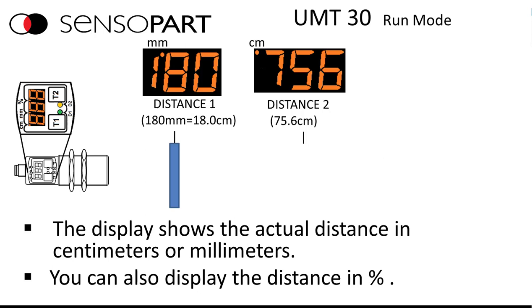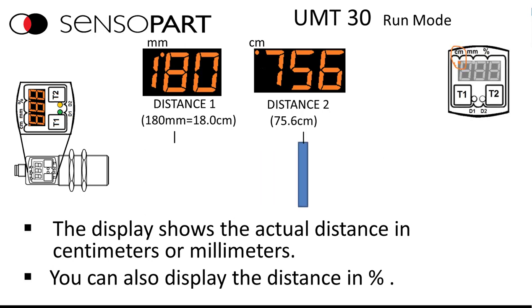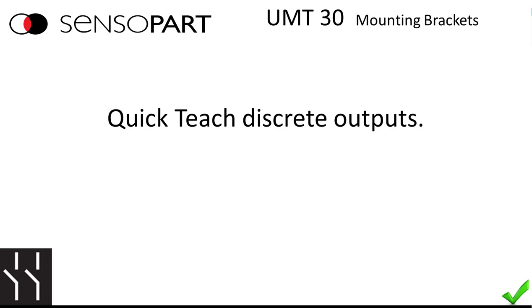So in this example, we have a distance of about 180 to 75.6 centimeters shown on the display. If it was closer than that, it would show millimeters.